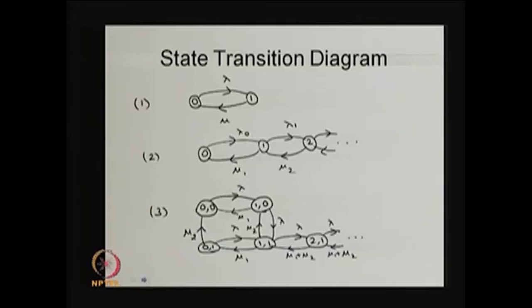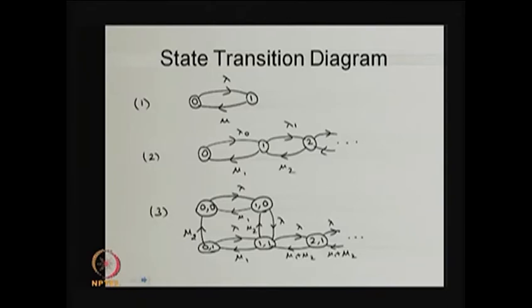I am going to give a few state transition diagrams for the time-homogeneous continuous time Markov chain. The first example has only two states 0 and 1, so the state space S is {0, 1}. The time spent in state 0 before moving into state 1 is exponentially distributed with parameter lambda. Once the system comes to state 1, the time spent in state 1 before moving into state 0 is exponentially distributed with parameter mu.